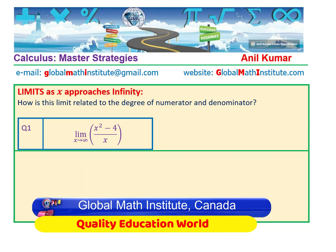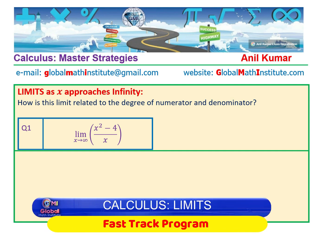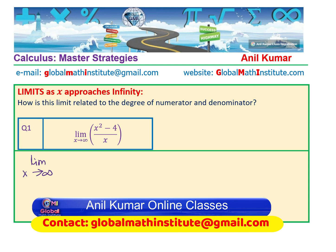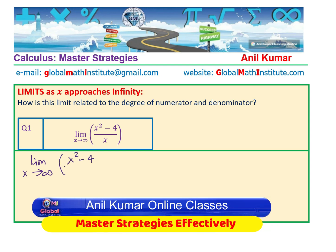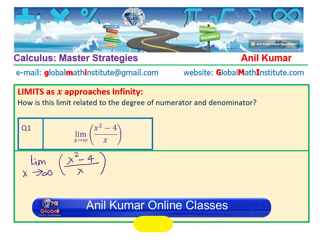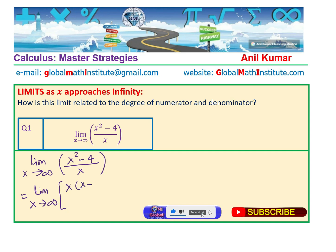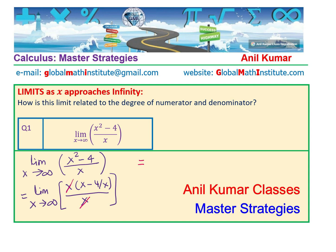Now let us take the solution of the very first problem, which is the limit when x approaches infinity for (x² − 4) divided by x. We have limit x approaches infinity of (x² − 4) over x. In the numerator, we will factor out x — so we get x times (x − 4/x), over x. Then x and x cancel, leaving limit x approaches infinity of x minus 4 over x.